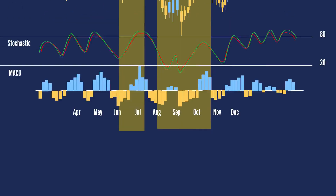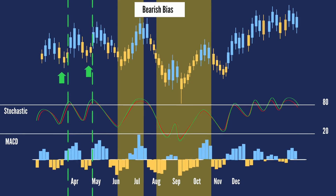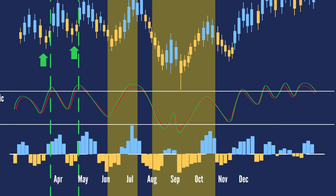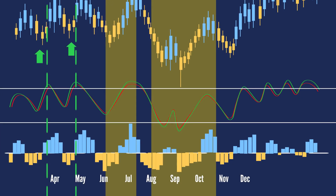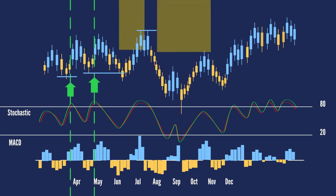After the Stochastic Oscillator signaled pullbacks in March and April, the MACD histogram turned positive to trigger two bullish signals. These did not last long or work out well, because trading was quite choppy. The thin blue lines marked support levels that could have been used for initial stops.